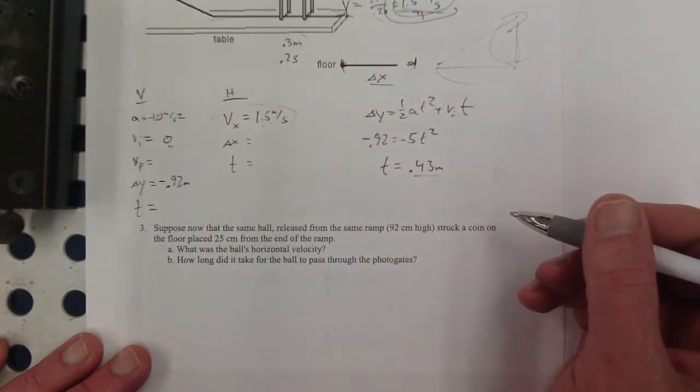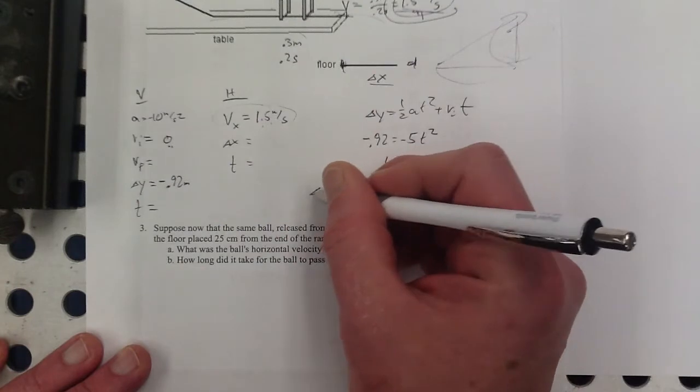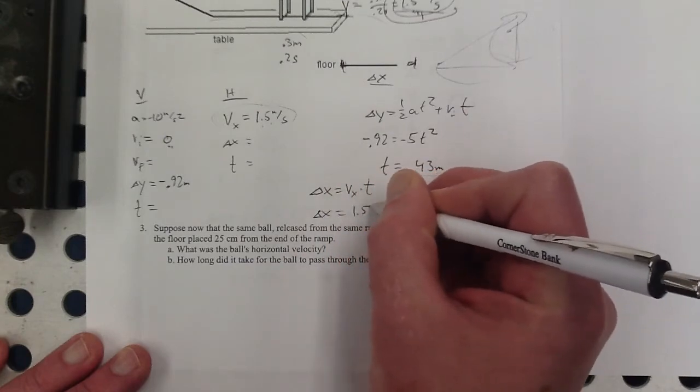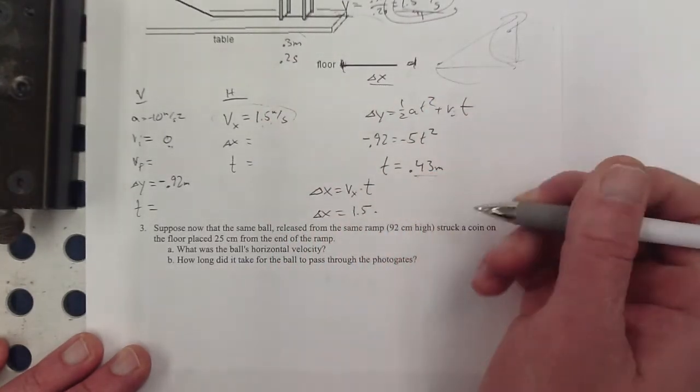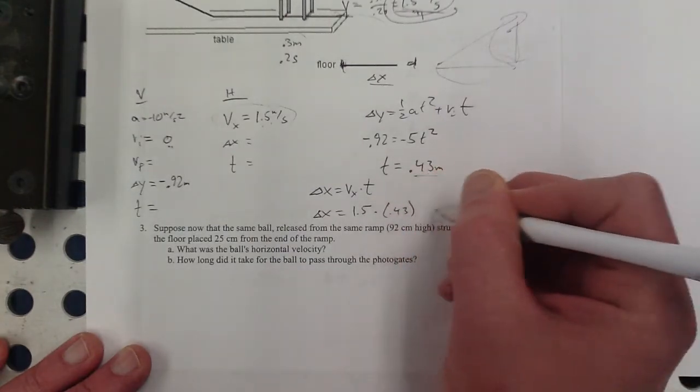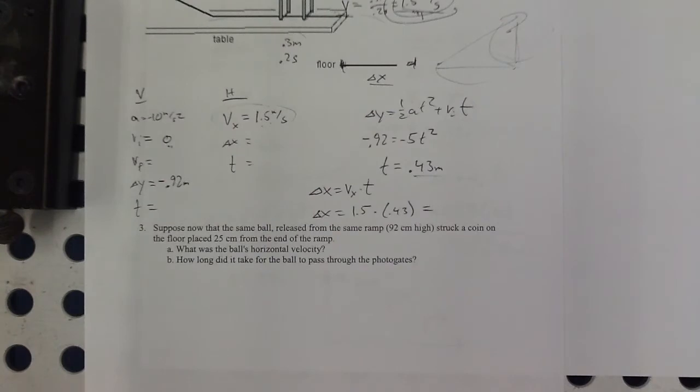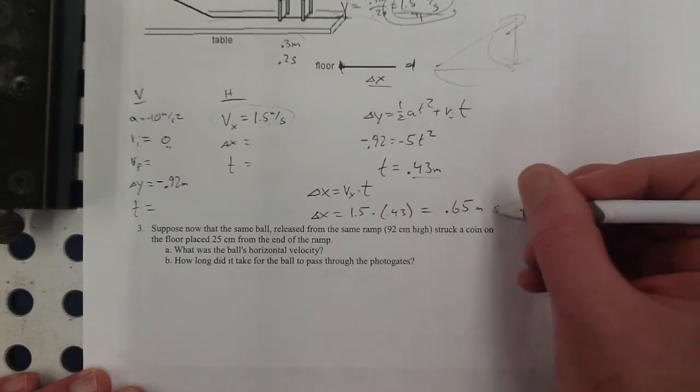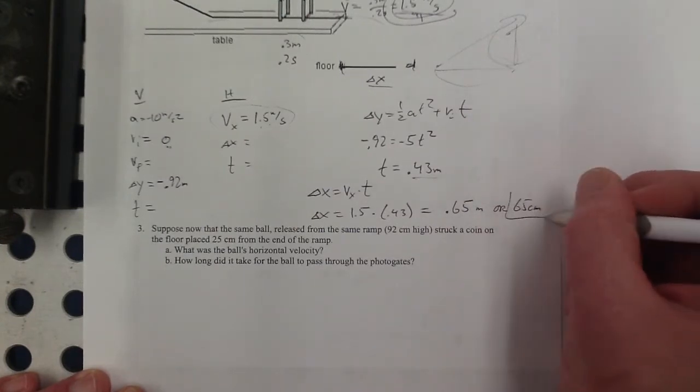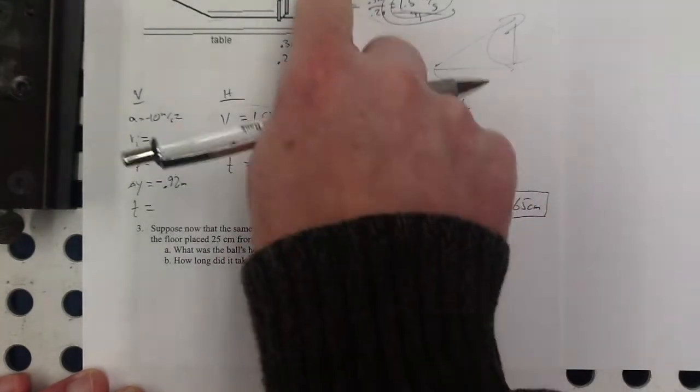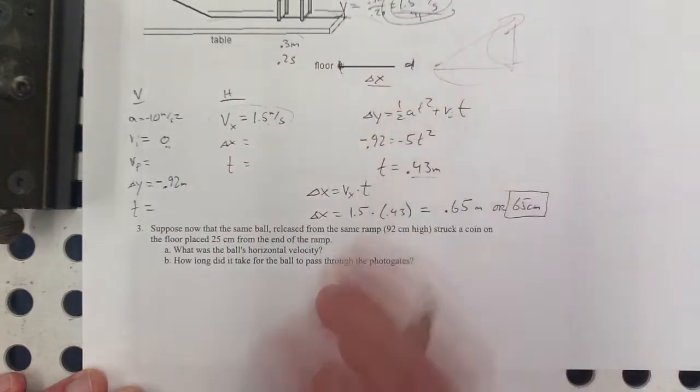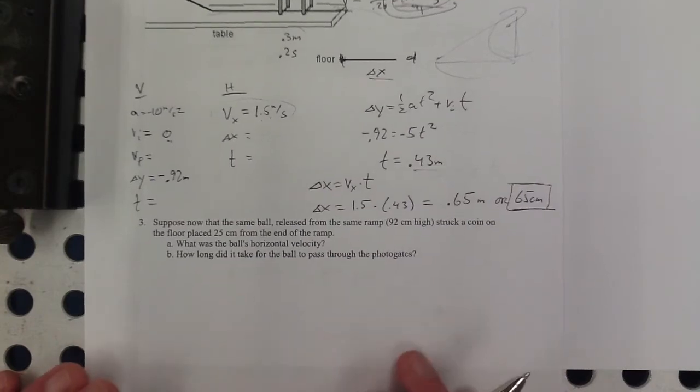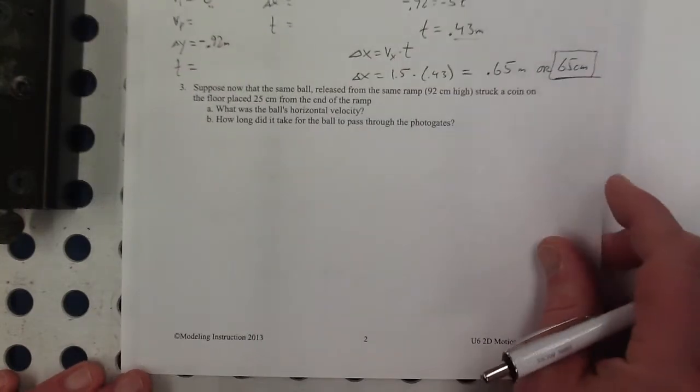And then for this here, in the horizontal direction, there's only one equation, delta x is equal to vx times time. The vx, the horizontal velocity, is 1.5 times 0.43. That's about 0.65 meters or 65 centimeters. Either one of those is fine. Since this was given in centimeters, probably the person, if they're actually going to try to put a coin here and really have it land on it, they're going to want to know in centimeters because they're going to have a meter stick that's marked out in centimeters.